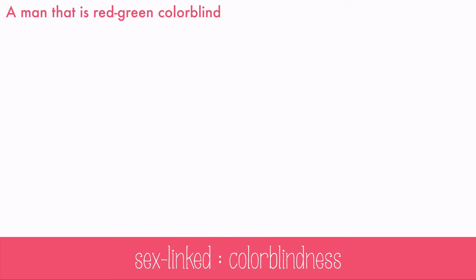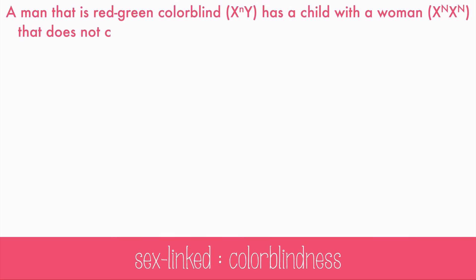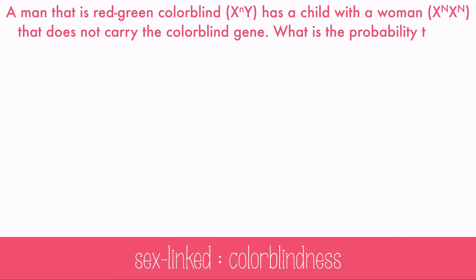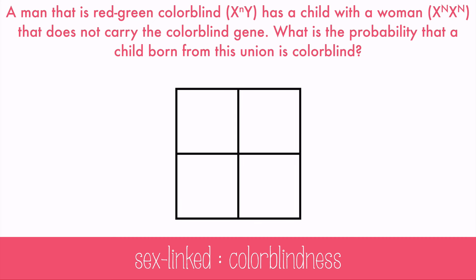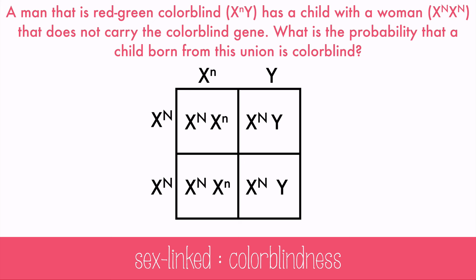A man who is red-green colorblind has a child with a woman who does not carry the colorblind gene. What's the probability that a child born from this union is colorblind? Once we fill out the Punnett square, we can see there's actually no chance of having any colorblind child. However, any girl born would be a carrier.